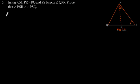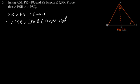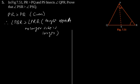As given in the question, PR is greater than PQ. Therefore, angle PQR is greater than angle PRQ, since the angle opposite to a larger side is larger. Let's call this equation one.